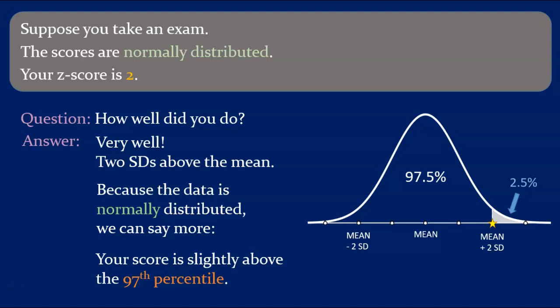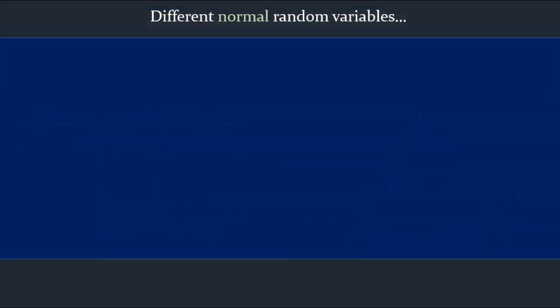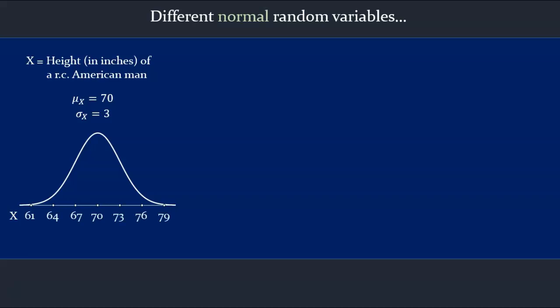So much for new terminology. Let's consider a few different normal random variables. First, let x be the height in inches of a randomly chosen American man. x is indeed normal, with a mean of 70 inches, that's 5 foot 10, and a standard deviation of 3 inches. Thus, if we wanted to put our values of x along the bottom of the bell, we'd have 70 at the center, while the standard deviation of 3 sets the scale.